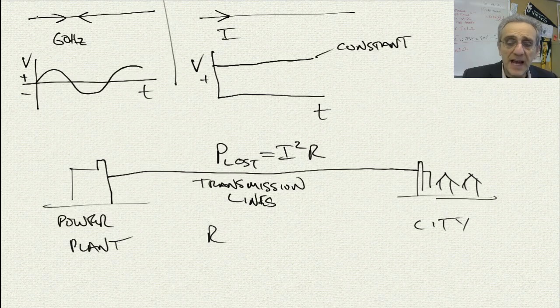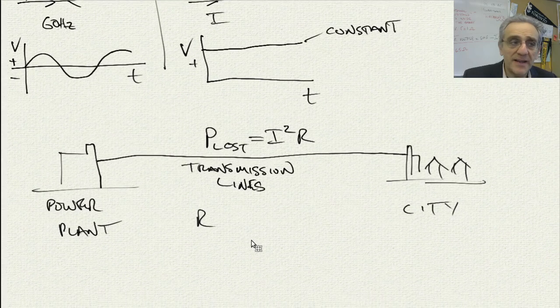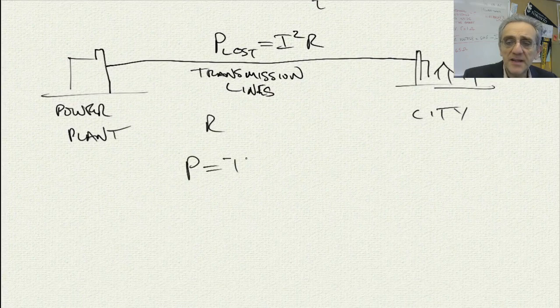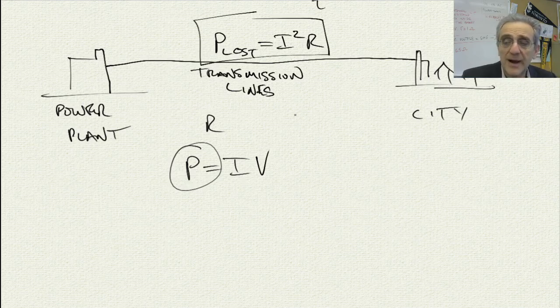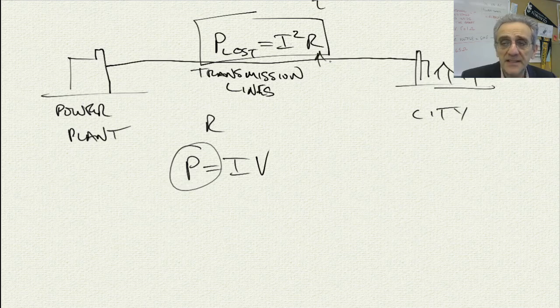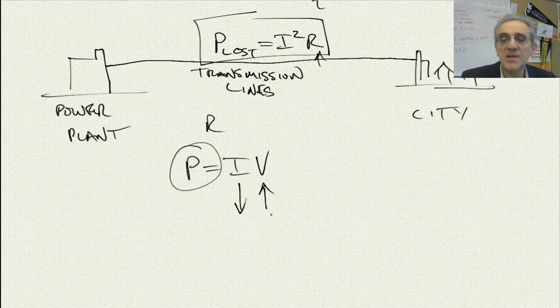It is the square of the current in the transmission lines multiplied by the resistance. So if the entire power that is transmitted, if the power transmitted is equal to IV, which is current times voltage, then in order to keep the power constant, if we want to reduce the power loss, we can't change the resistance of the lines but we can reduce the current in the lines. But if we reduce the current, then in order to keep the power the same, we must increase the voltage, because the product of I times V needs to remain the same or constant.